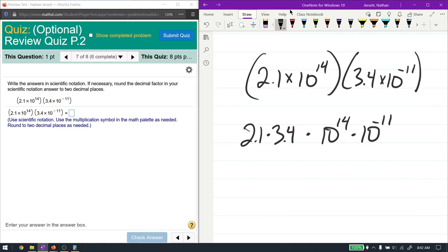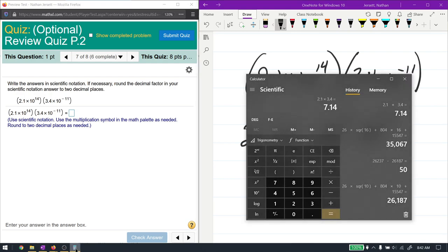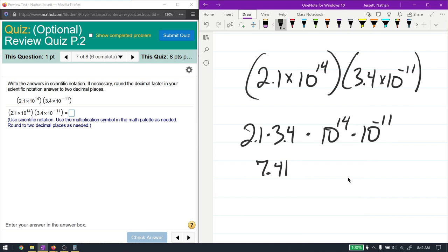This, this, this, and of course the operation between them, it's all multiplication. So multiplication is commutative. You can move them around as much as you like, as long as they're all multiplying, in which they are. So 2.1 times 3.4. Let's pull up the calculator. It gives us 7.14. And here we have like bases. 10 to the 14 and 10 to the 11. They are multiplying. So we add the exponents. 14 plus a negative 11. 14 plus negative 11, that's the same thing as 14 minus 11, which is 3.